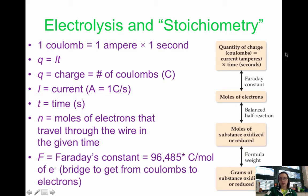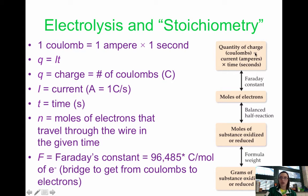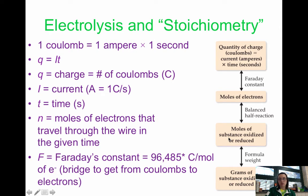That four-step process is what the diagram on the right represents. First, calculate the charge in coulombs using charge equals current times time. Then use Faraday's constant to convert coulombs to moles of electrons. Next, use the balanced half-reaction to convert moles of electrons to moles of the substance being formed or consumed. Finally, use molar mass to convert moles of the substance to grams.